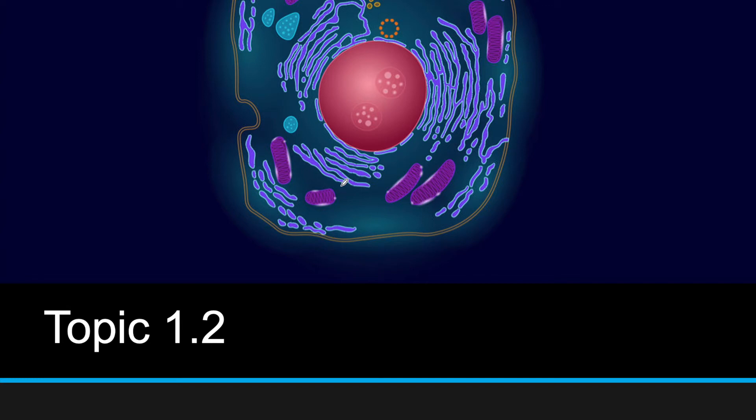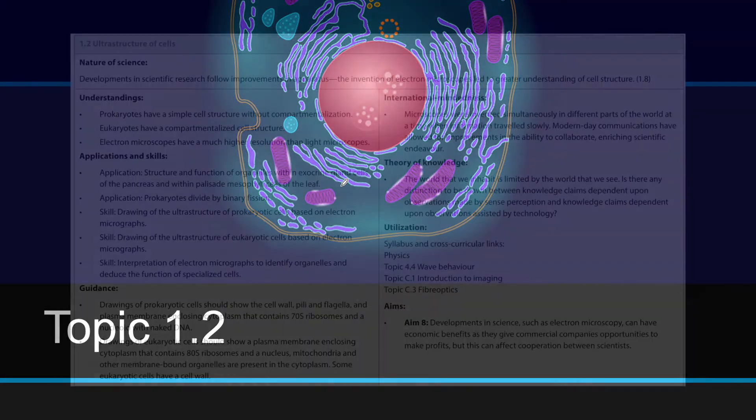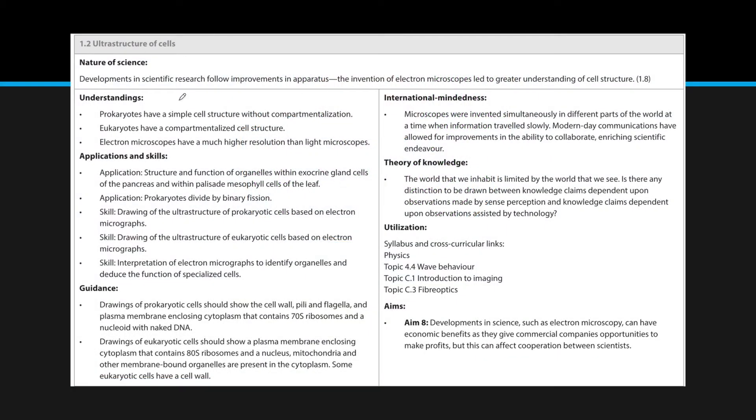Hi, welcome back. This is topic 1.2. This topic covers the differences, or basically the basic differences between prokaryotic cells and eukaryotic cells, and how we look at them under the microscope in order to determine these differences. So here are the understandings, nature of science, everything IB expects you to know.